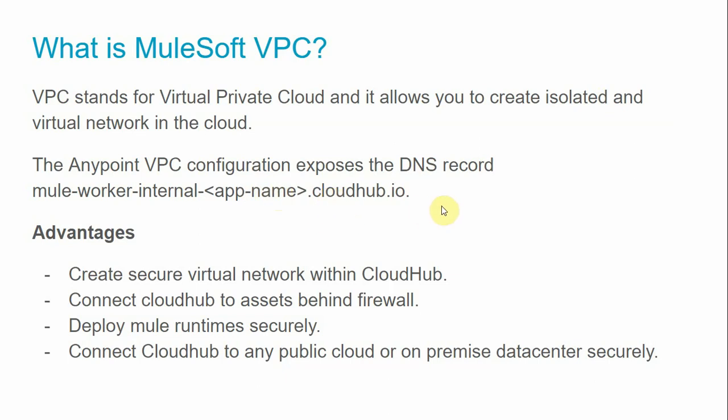The advantages of VPC: you are creating a secure virtual network within cloud app. When you deploy the application within the VPC, it cannot be accessed over the internet. To access it over the internet, we need to set up some rules. We will see how to restrict the application within the VPC, how to access the application over the public internet, how to access it using a dedicated load balancer, and how to connect cloud app to assets behind the firewall.